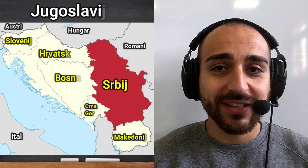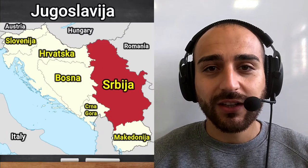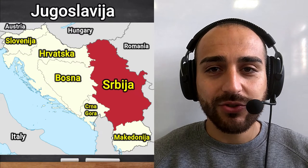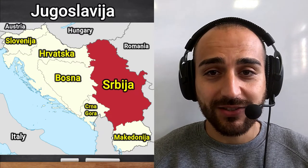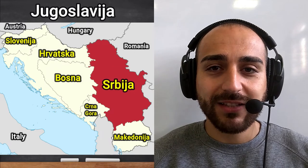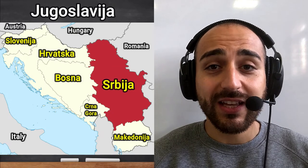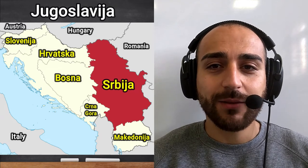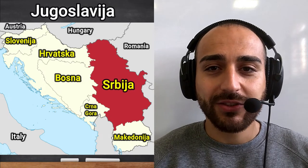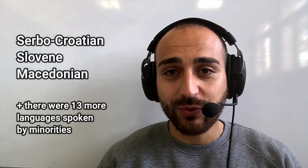Yugoslavian languages, or languages of Yugoslavia, are the languages spoken in the former Yugoslav states. They are mainly Indo-European languages and dialects, namely dominant South Slavic varieties: Serbo-Croatian, Slovene and Macedonian.